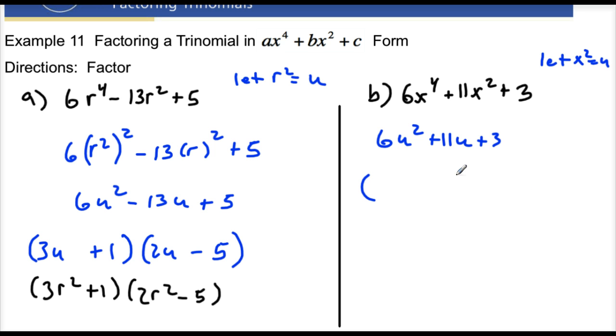Alright, so if I factor that guy, let's see. If I want 6u, I'm just going to use 3u and 2u and 1 and 3. So 1 times 2u is 2u, and 3u times 3 is 9u, and 9 plus 2 is 11u. So I'll make these both plus signs. So that's the answer right there.